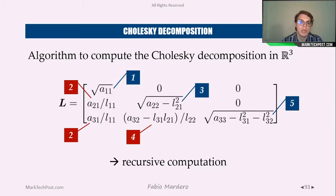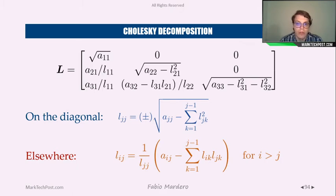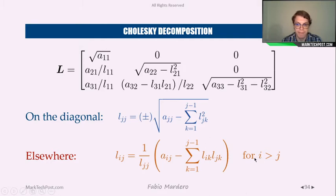Notice that the diagonal elements have a different computation from the off-diagonal ones. The generic element on the diagonal is the square root of a_jj — the element on the diagonal of the original matrix — minus a running sum. Elsewhere, we get a different formula. So in a recursive way, we can find all the elements that define the Cholesky factor of A.